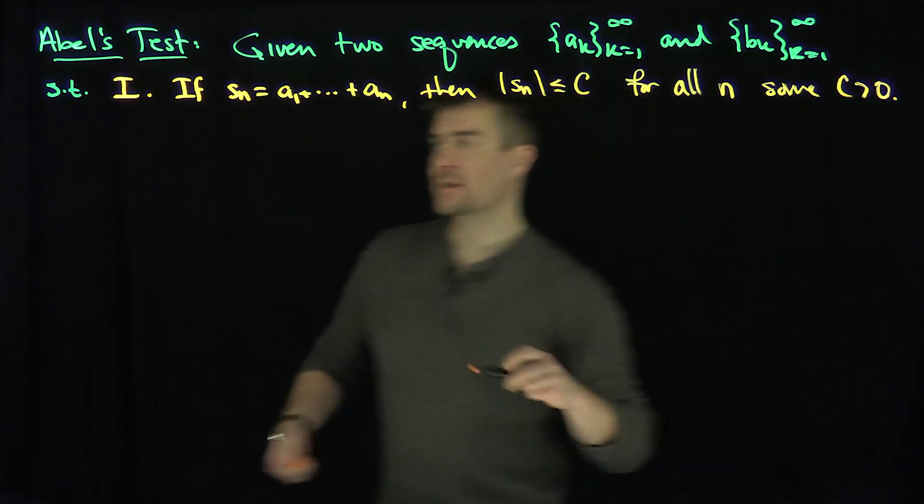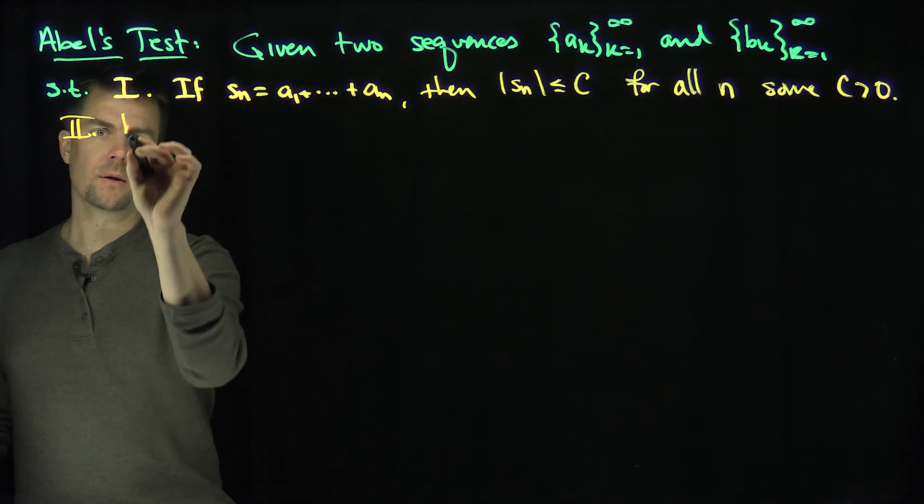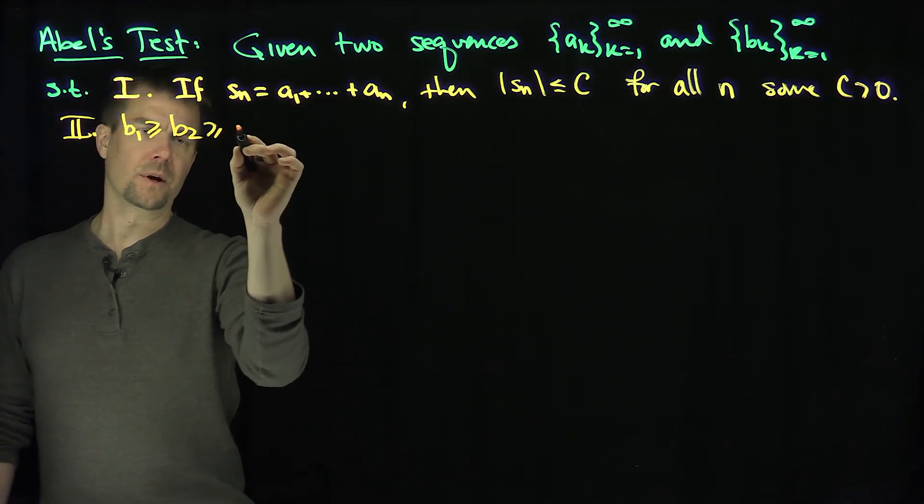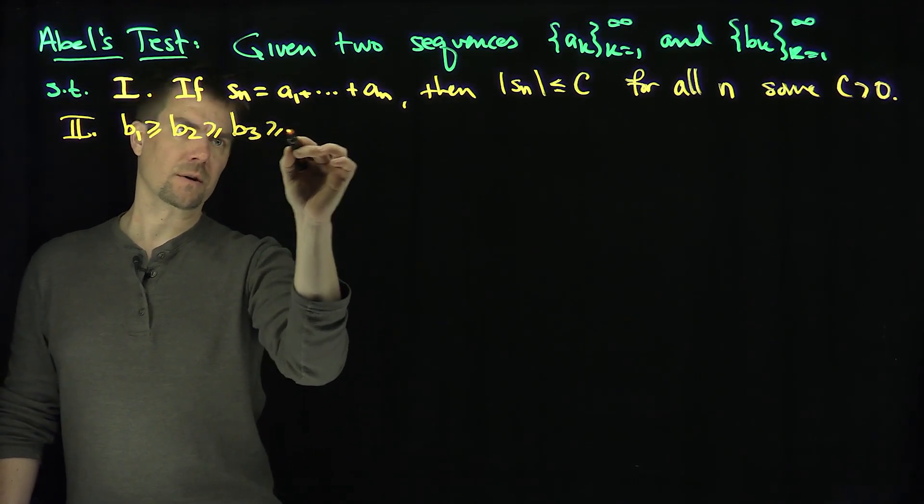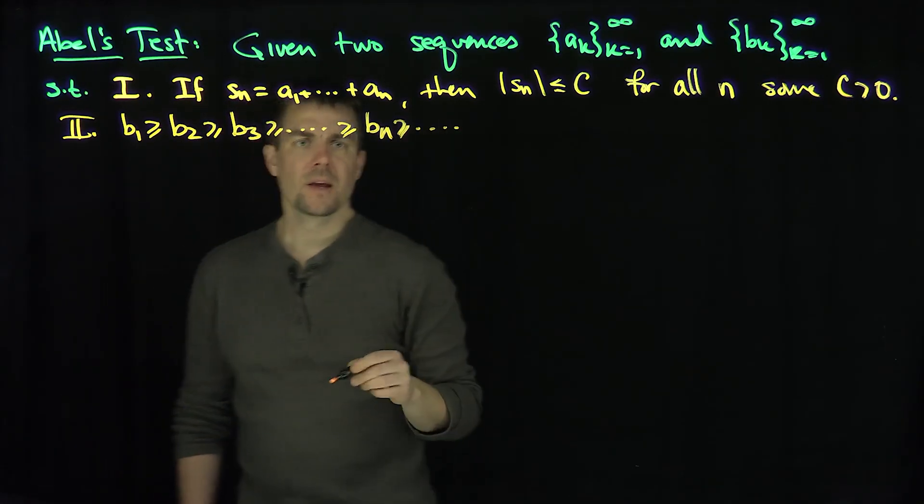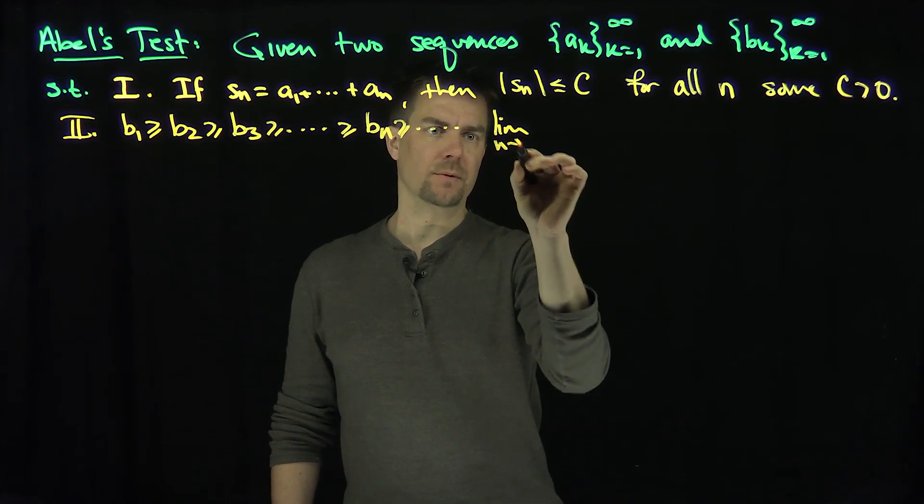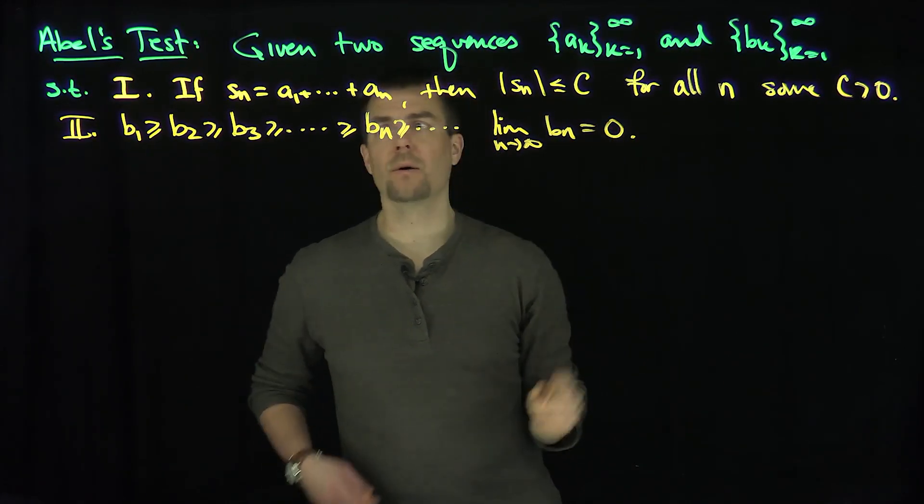And then the second condition we're going to need is that the b monotonically decrease to zero. b_1 ≥ b_2 ≥ b_3, et cetera, ≥ b_n, so they're monotonically decreasing, and they decrease to zero. And the limit as n tends to infinity of the b_n is equal to zero.